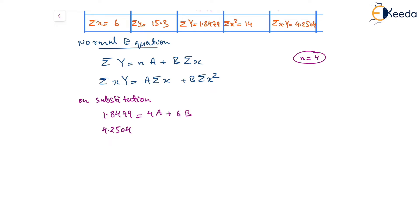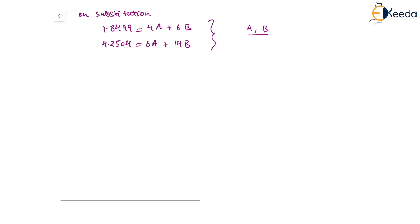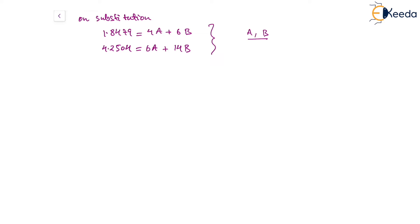So these are the two simultaneous linear equations which we have to solve to get the values of A and b. By the method of elimination, the value of A comes out to be 0.0184 and the value of b comes out to be 0.2957.